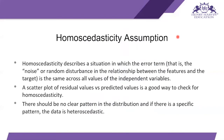The third assumption is homoscedasticity. Homoscedasticity describes a situation where the error term — the noise or random disturbance in the relationship between features and target — is the same across all values of the independent variable. A scatter plot of residual values versus predicted values is a good way to check for homoscedasticity. There should be no clear pattern in the disturbance; if there is, the data is heteroscedastic.